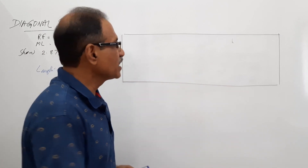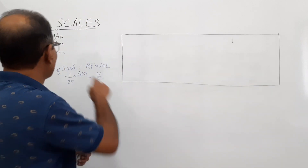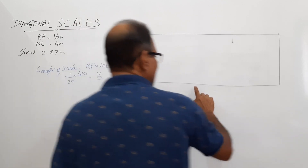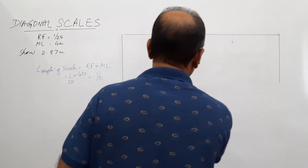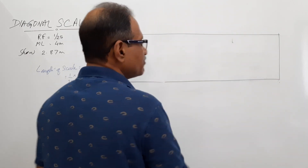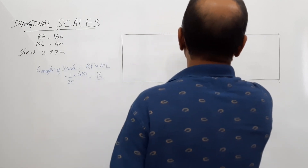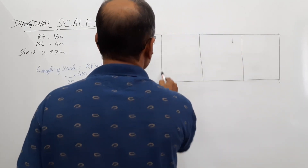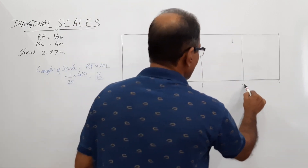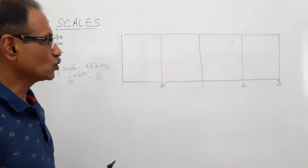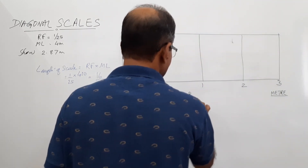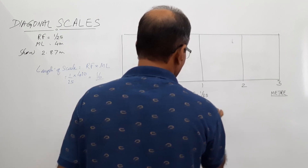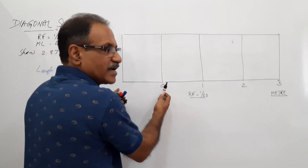Make it a good shape. This length represents 4 meters — the maximum length is 4 meters and it is represented by 16 centimeters. You have to divide this length into 4 equal parts so that each division represents 1 meter. Divide this into 4 equal parts and write 0, 1, 2, 3. The unit here is meters. The RF is written at the center: RF = 1/25. Now the leftmost division of 1 meter is divided into 10 equal parts.